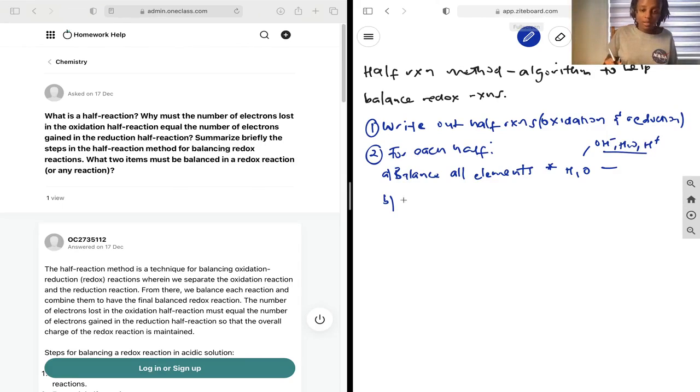Next, b) balance O with H2O. This is in the scenario that we're working in an acidic solution. If we're working in a basic solution, we technically balance O with OH minus, but we'll get to that later. c) Balance H with H plus. And lastly, d) balance the charges with electrons.